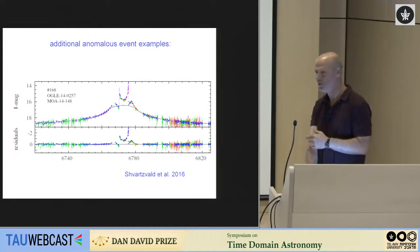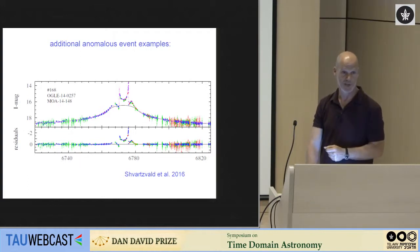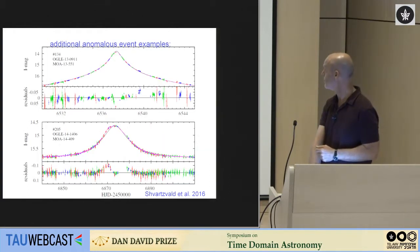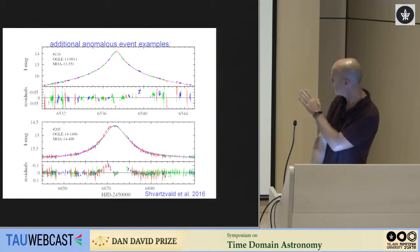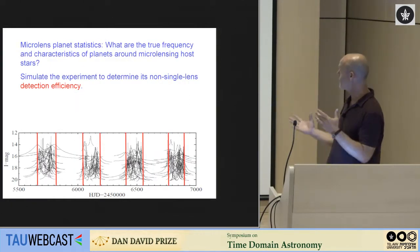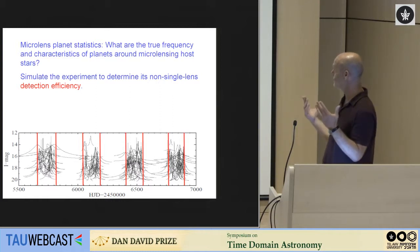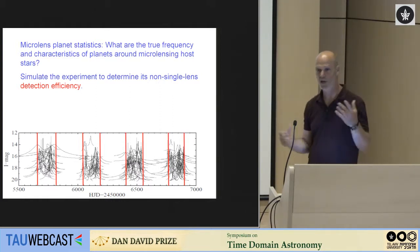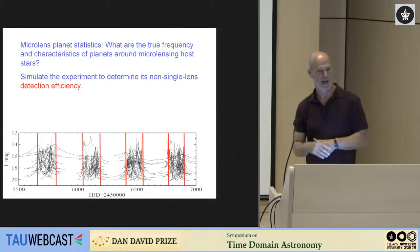So we found many of these. Here are some typical low magnification events. Now look at the magnification on the left axis. We're no longer talking about magnification 100 events. These are just typical magnification few events that one sees. And the data from all three observatories. And you see the nice coverage where in these cases, there is no anomaly. These are events where no planetary anomalies were detected.